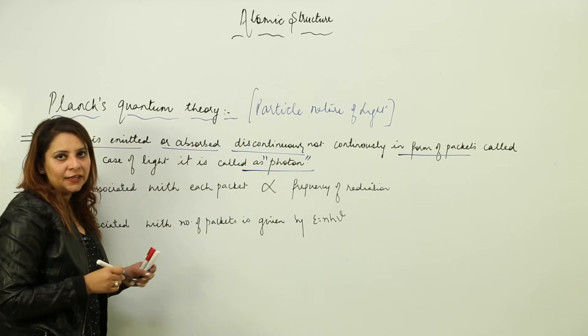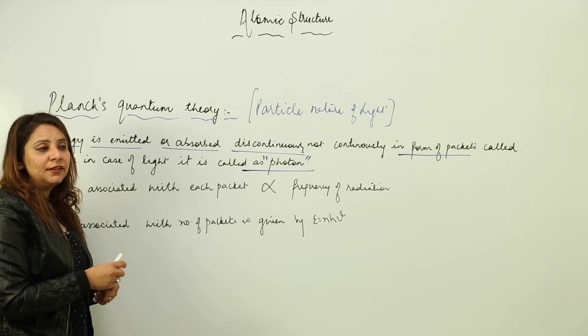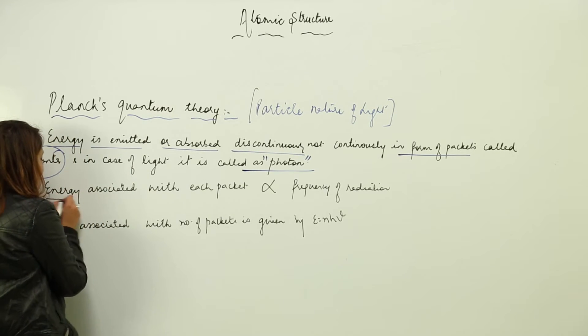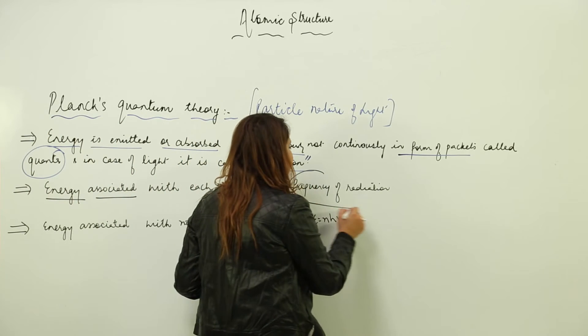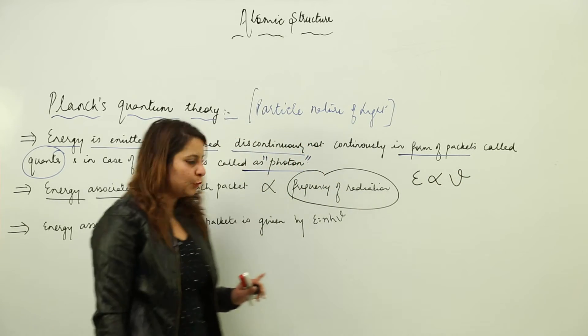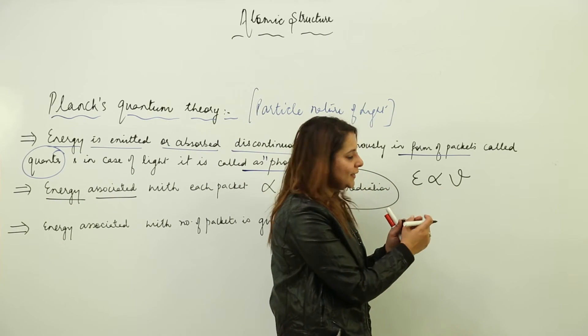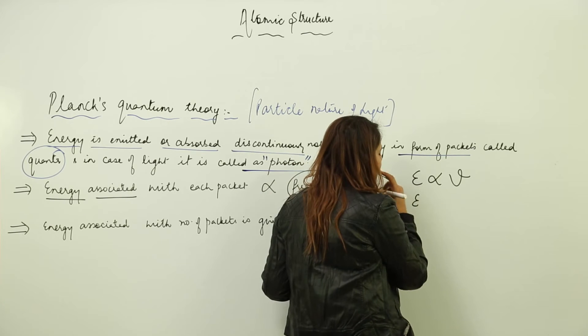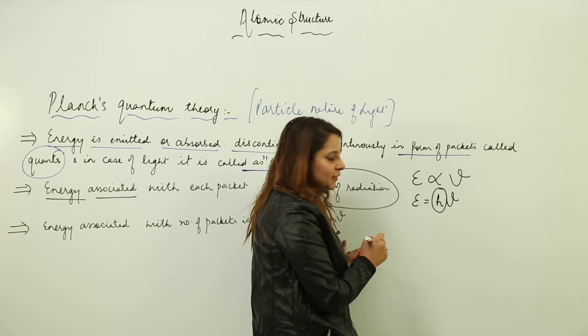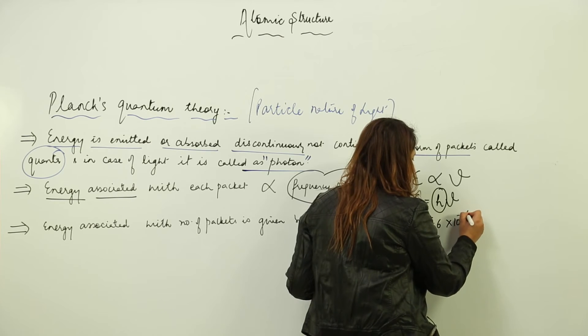In case of light, the packet of energy is called a photon. Now, the energy possessed by each packet depends on what factor. Energy associated with each packet depends upon the frequency of radiation - directly proportional. According to the second postulate, energy is directly proportional to the frequency. If we remove the proportionality sign, we need to put a constant which is Planck's constant h. The value is 6.6 × 10^-36.